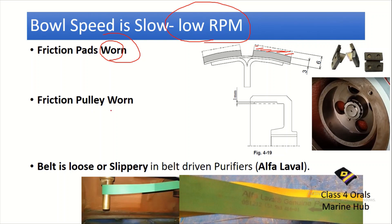If the friction pulley is worn out, there can be ridge formation. This has happened on my ship also. If too much load is there, it will cause grooving of the friction pulley beyond the maker's recommendation. What will happen is the speed of the bowl will be less, and ultimately the operating water will not have sufficient speed and sufficient closure pressure for the bowl to lift upwards. So in that case, the purifier will be overflowing.